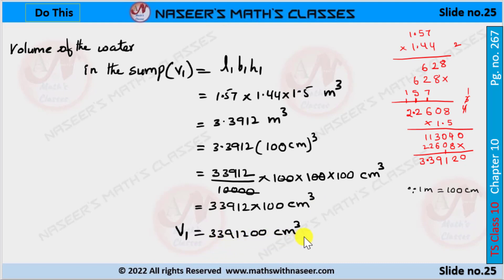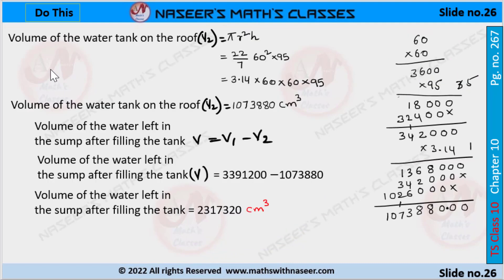Now we find the volume of the water tank on the roof, that is, the cylinder. Volume V2 = π r² h, where pi = 3.14, r = 60 centimeters, and h = 95 centimeters.